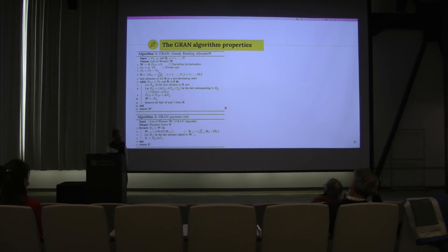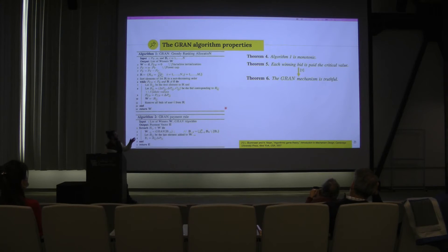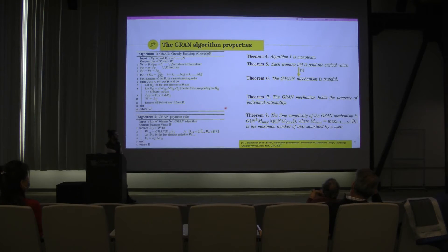The heuristic payment rule is used to ensure the property of truthfulness for the heuristic solution. We prove improved computational rationality and include the time complexity of the algorithm.